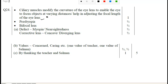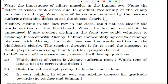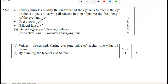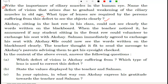The defect is presbyopia, and the lens used to correct it is the bifocal lens. So this is the answer to the first question.